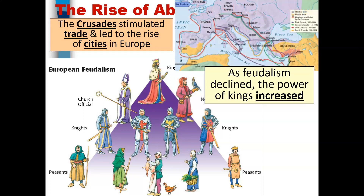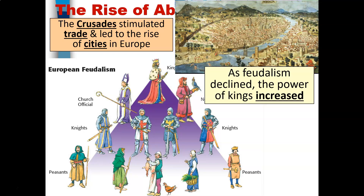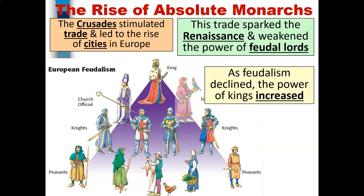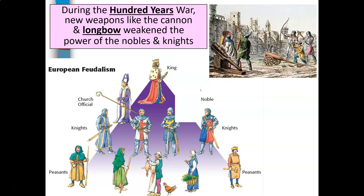Here we have a map showing how Europe looked around this time period. You can see how most of Europe was Christian. To the top right you see the city of Florence, which was very prosperous. Florence led the way during the Renaissance in terms of economic growth and trade. This trade sparked the Renaissance and weakened the power of feudal lords. During the Hundred Years War, new weapons like the cannon and longbow also weakened the power of the nobles and knights.